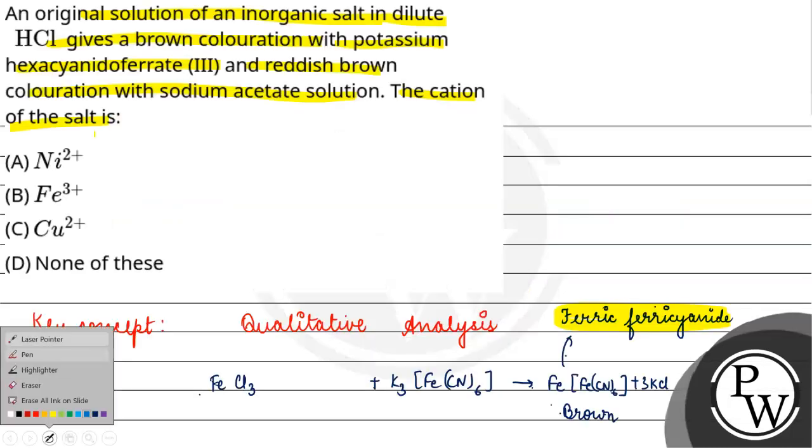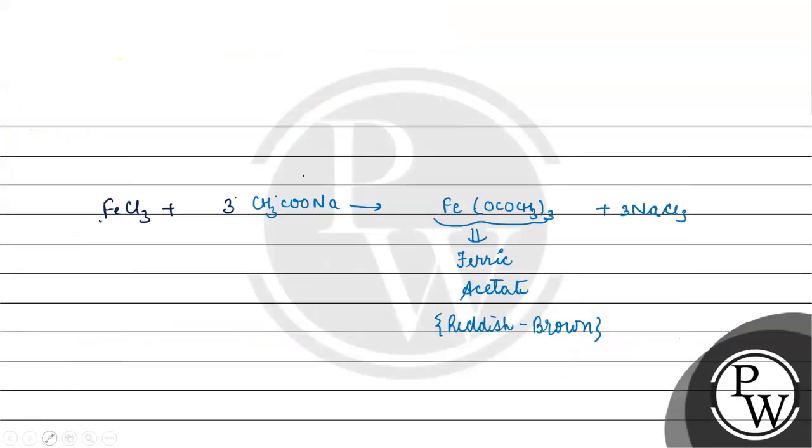So we have seen that iron salt will give brown coloration with hexacyanoferrate and reddish brown coloration with sodium acetate. So this option is